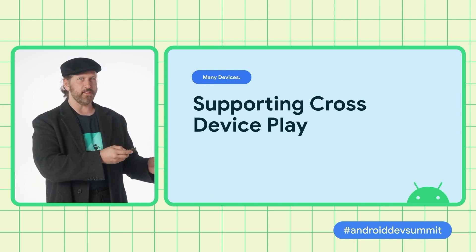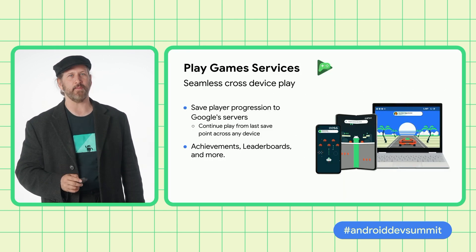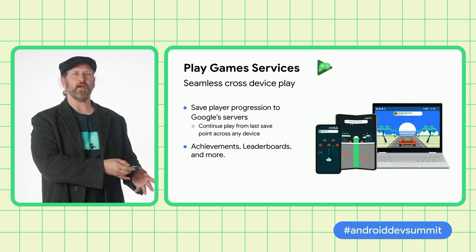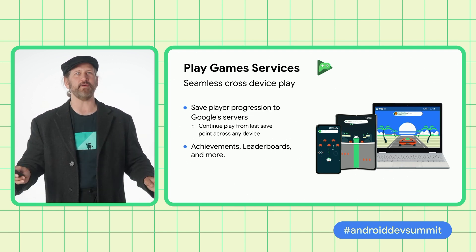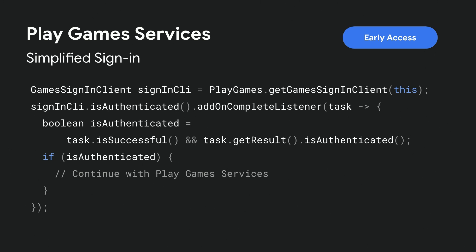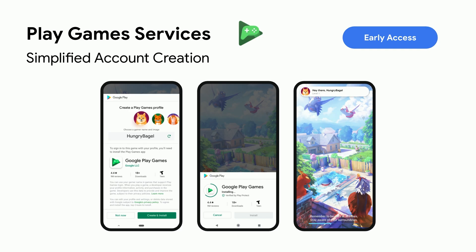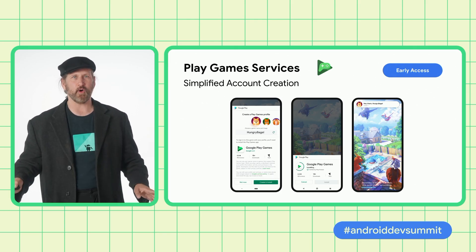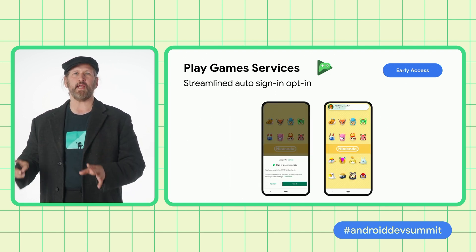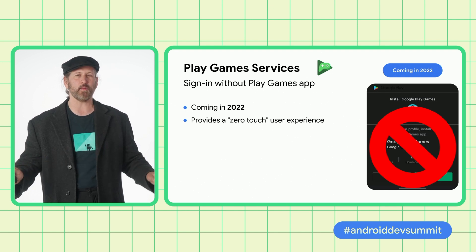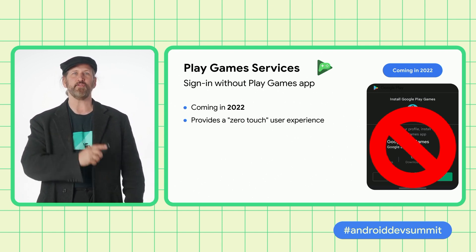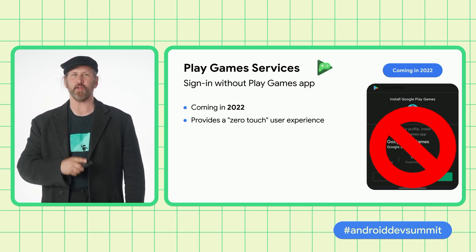Now that you're reaching more screens, it's time to allow players to seamlessly progress through your game no matter what device they're currently using. The Play Game Services SDK gives you a convenient way to sign in your players and save their game progression, enabling you to retrieve player game data and allowing returning players to continue playing from their last save point from any device. You can also integrate popular gaming features such as achievements and leaderboards. We're continuing to invest in Play Game Services with an updated sign-in API, now in early access, that allows for a one-line implementation. We've also simplified user setup, combining the Google Play Games install and profile creation into one step. And starting in 2022, Play Game Services will no longer require installing the Google Play Games app, allowing two billion users to sign into your Play Game Services-enabled games with a zero-touch experience.